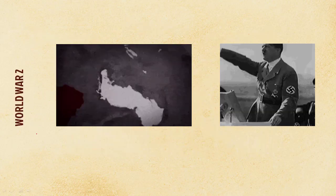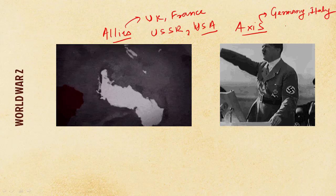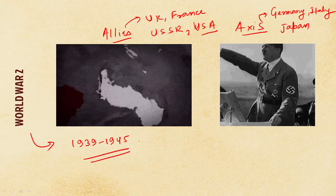Before moving further, let us discuss about World War II in brief. In World War II there were two major parties — the first major group was Allies and the second was Axis. In Allies we have UK, France, USSR (presently called Russia), and later USA joined. In Axis powers we have three major countries: Germany, Italy, and Japan. World War II lasted from 1939 to 1945 and it ended with the US bombing of Japan in Hiroshima and Nagasaki.